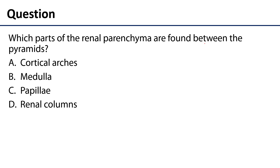That leads us to the assessment question: which parts of the renal parenchyma are found between the pyramids? Is it the cortical arches? No — those are found superficial to the pyramids. Is it the medulla? No — those are the pyramids. Is it the papilla? No — the papilla are the apices of the pyramids. The correct answer is renal columns, which are found between the pyramids. Thank you very much for your time.